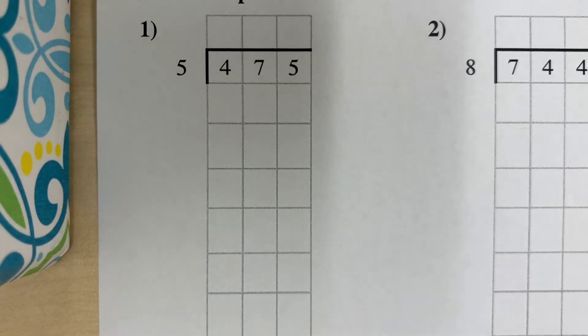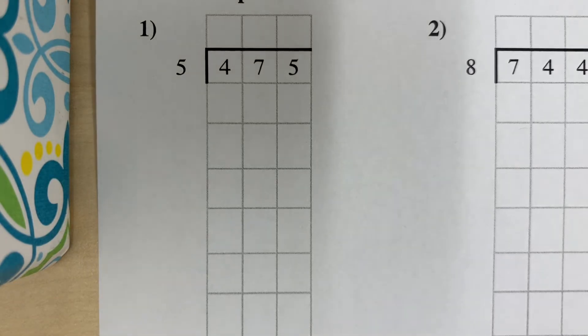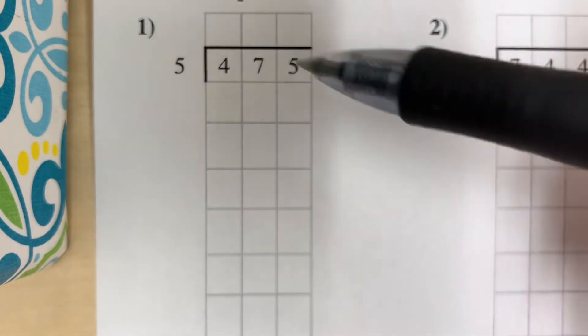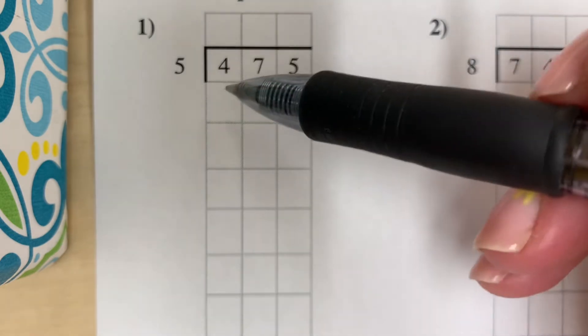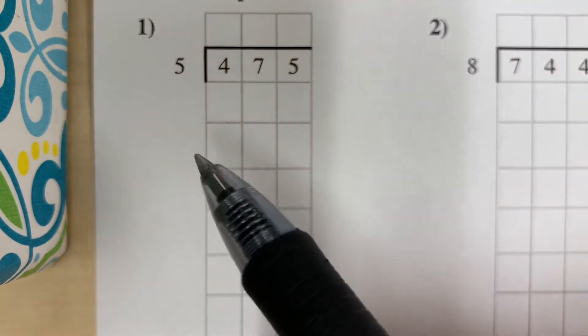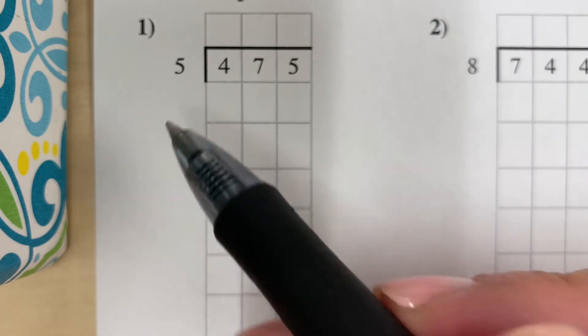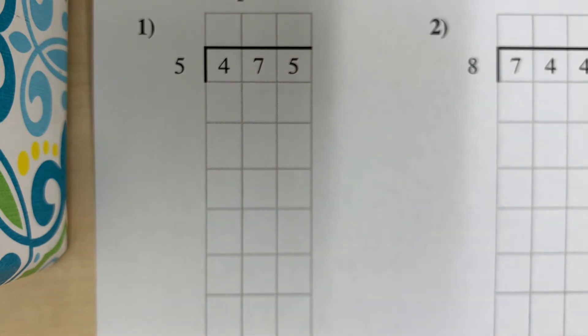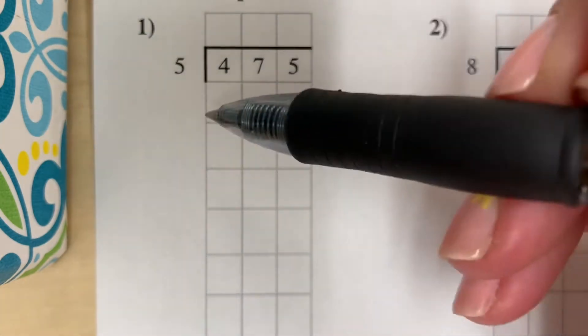Let's look at division with a single digit divisor. We have the number inside our division box, which is called our dividend, 475, and we have the number outside, which is our divisor, 5. We read that as 475 divided by 5.